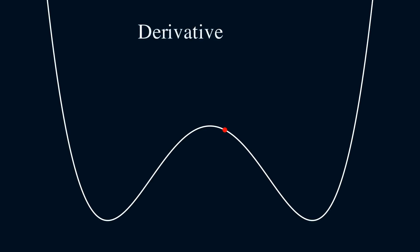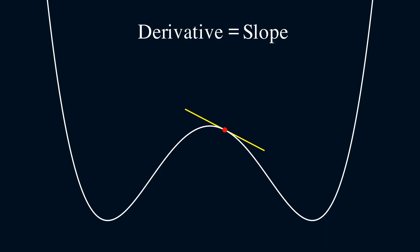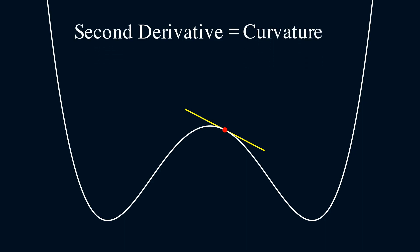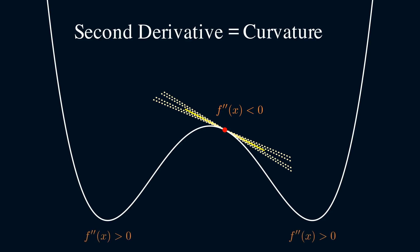A lot of us intuitively think of the derivative at a point as the slope of its tangent line, and we think of the second derivative as representing curvature. Graphically, it's the rate of change of the slope. A negative second derivative means the slope is decreasing, and a positive sign means the slope is increasing.